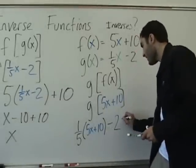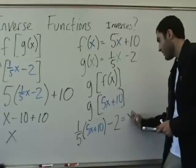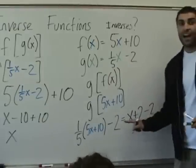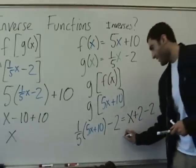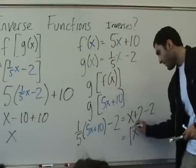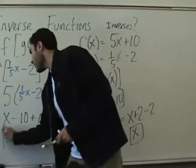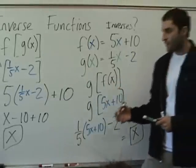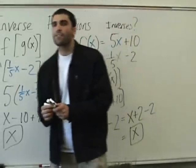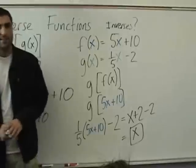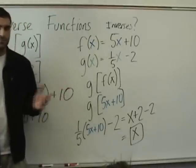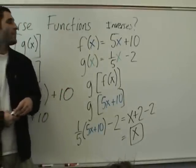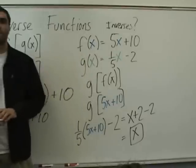x plus 2 minus 2 equals x. So f of g of x is x, and g of f of x is x. Are they inverses of each other? Yes. That's all it is. Then you confirm that f and g are inverses of each other.